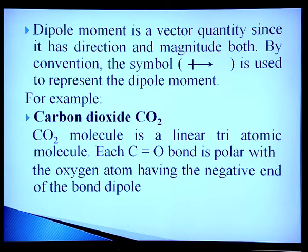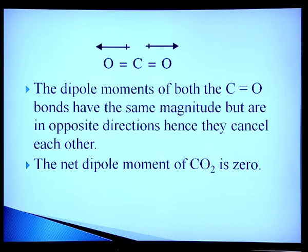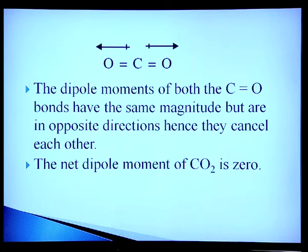For example, the carbon dioxide molecule is a linear triatomic molecule. Each C=O bond is polar, with the oxygen atom having the negative end of the bond dipole. Since both bond dipoles are opposite to each other, carbon dioxide shows no net dipole moment — its net dipole moment is zero. The dipole moments of both C=O bonds have the same magnitude but are in opposite directions, so they cancel each other.